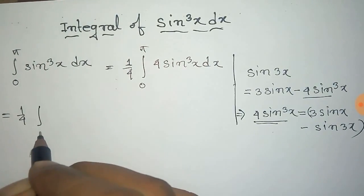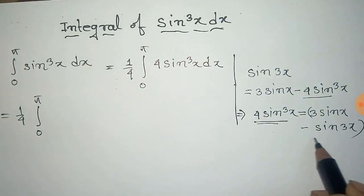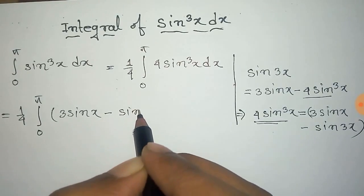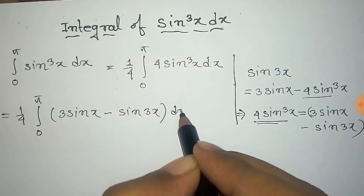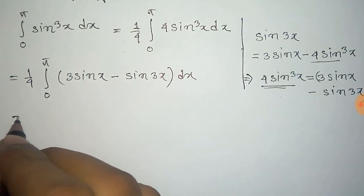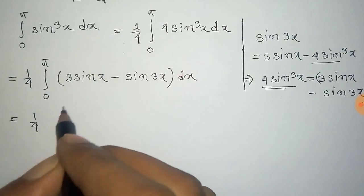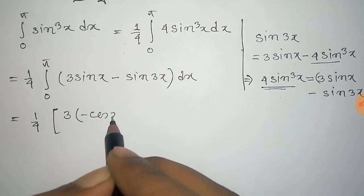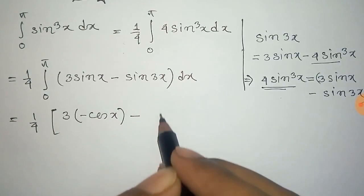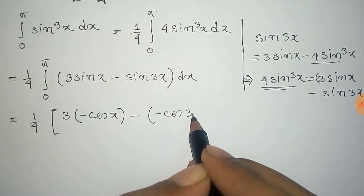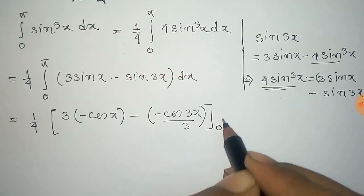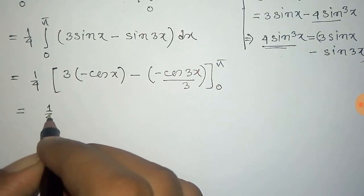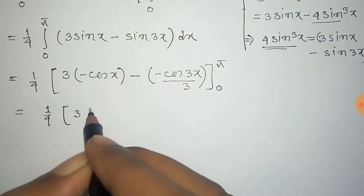The integral becomes one-fourth times the integral from zero to pi of [3sin(x) − sin(3x)] dx. We can easily integrate this: the integral of 3sin(x) is −3cos(x), and the integral of sin(3x) is −cos(3x)/3, within the limit zero to pi.